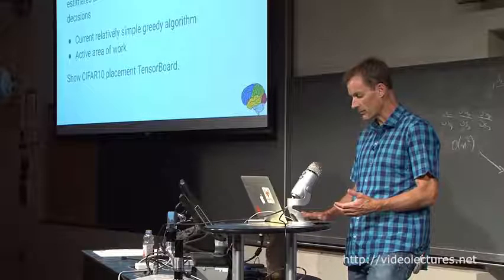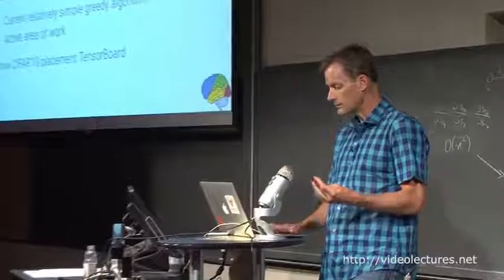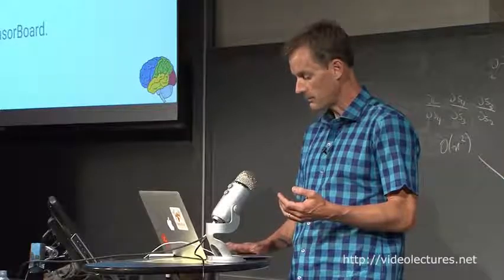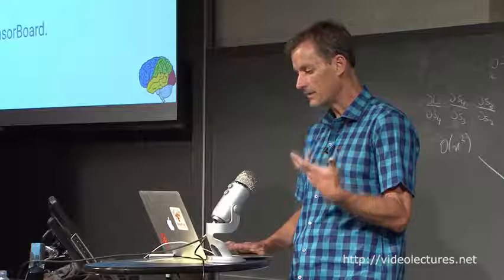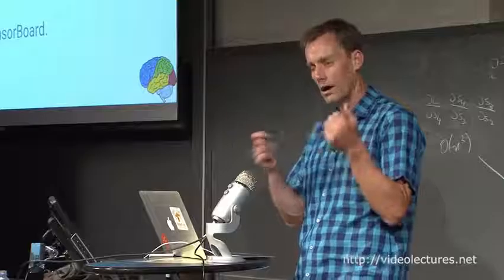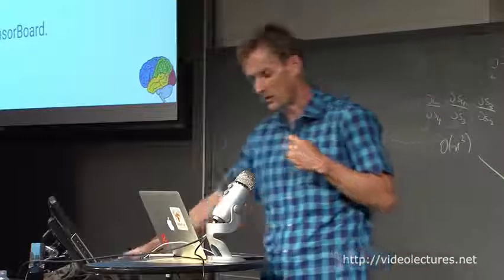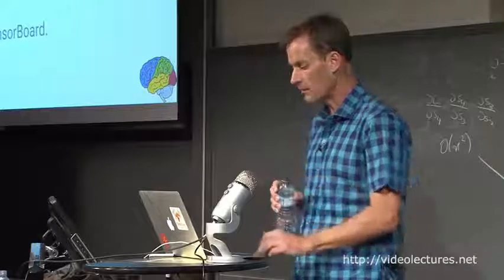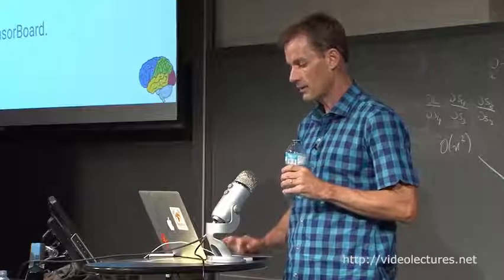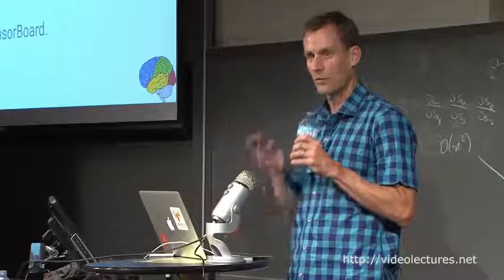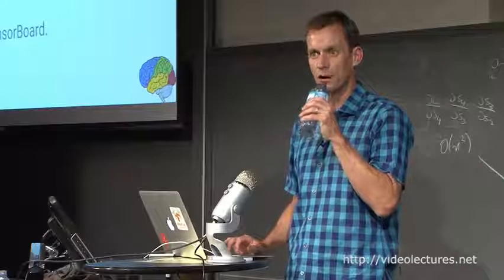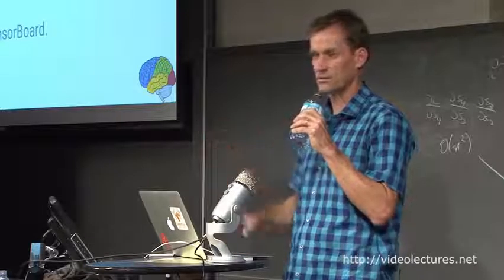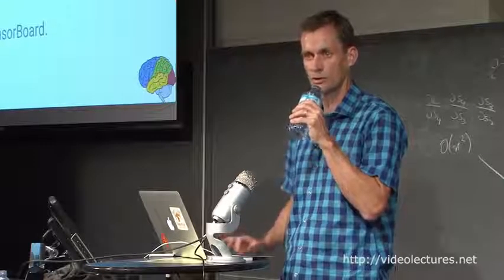And then the placement algorithm, plus a cost model about how long different nodes take to execute, and also how big the tensors are that are flowing around in the graph can make placement decisions. And currently, we have a pretty simple, greedy algorithm. But as I said, I think this would be a pretty interesting problem. We have some people starting to work on it to actually do a machine learning-based approach to doing placement.